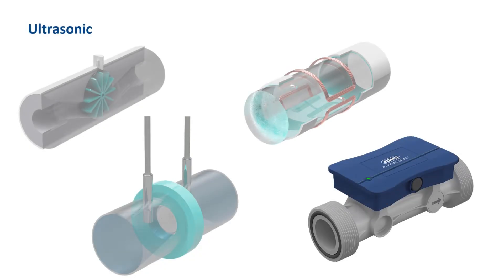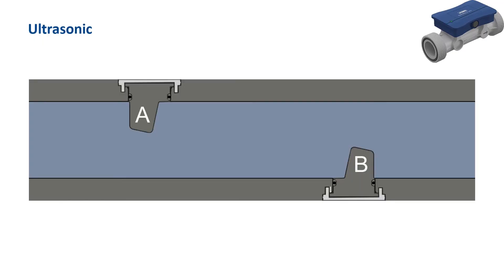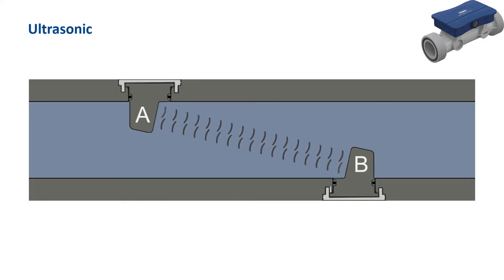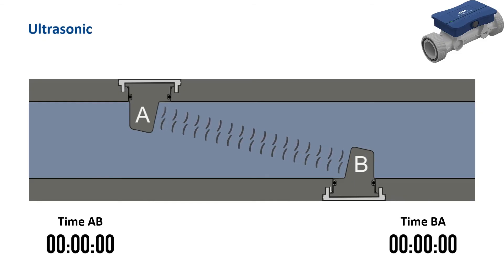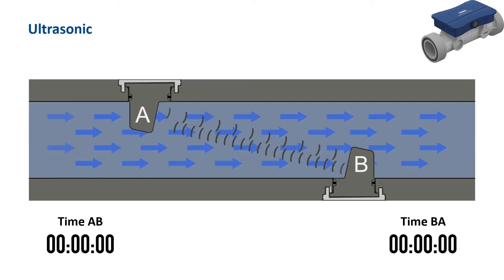Finally, the ultrasonic flow meters of the FlowTrans US series. JUMO ultrasonic flow meters operate according to the Transit Time method. Two transducers are located in the pipe section, shown here as A and B. These work according to the piezoelectrical effect and send and receive ultrasonic waves. If the medium is stationary, the recorded transit time of the ultrasonic waves from A to B and from B to A are the same. If the medium begins to flow, the ultrasonic waves become faster in the direction of flow. The greater the difference between the transit times in both directions, the greater the velocity of the flow medium. The time difference is therefore a measure of the flow velocity.